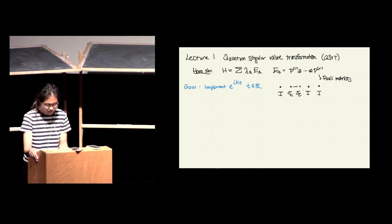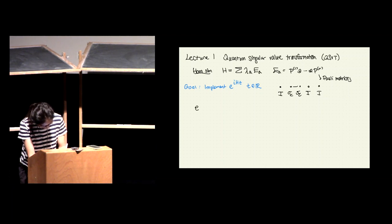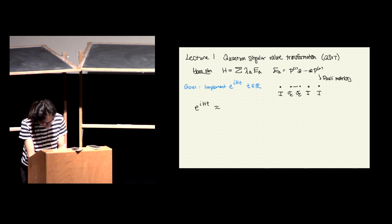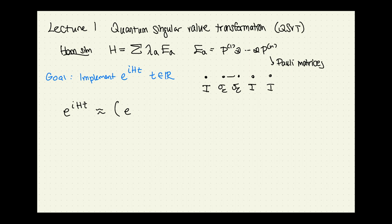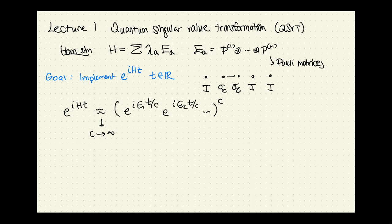Early algorithms proceeded using the Trotter approximation: if you take your Hamiltonian, you can approximate its evolution by evolving individual terms. You evolve with respect to E₁ for some small time, then E₂ for some small time, and so on. This approximation works when C is large, and since the terms are Pauli matrices they are easier to implement.